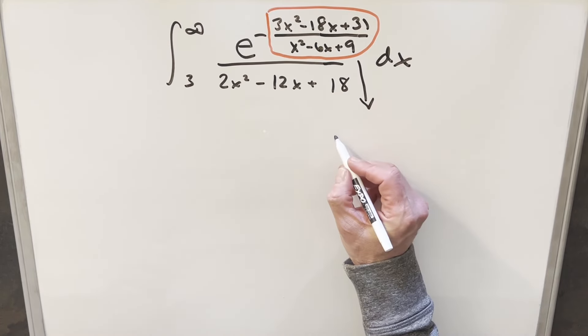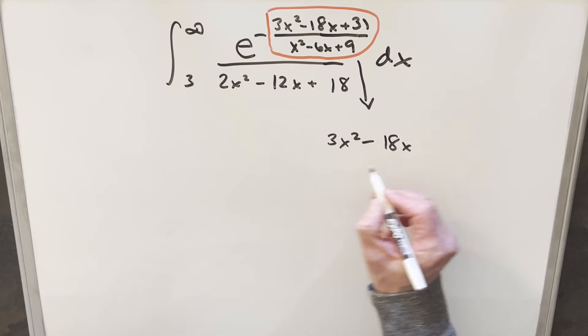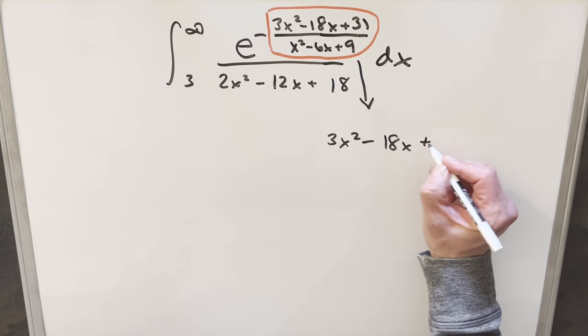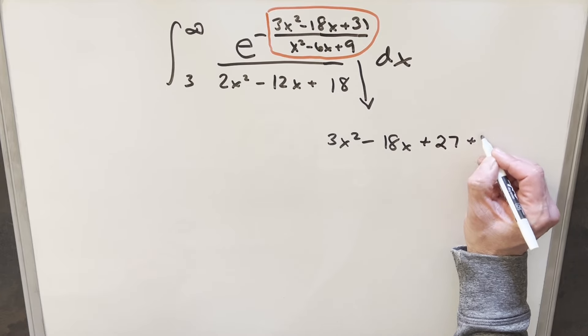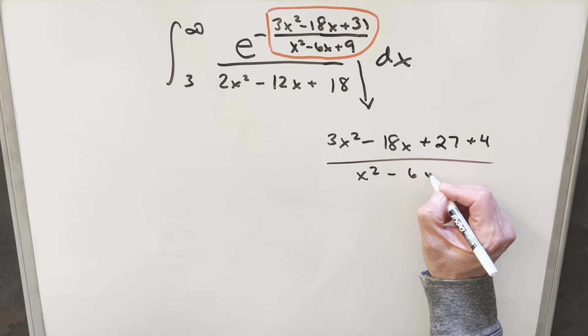So let's just take this exponent over here and deal with that separately. I'm going to write this out as three X squared minus 18 X. And then for this 31, let's just split this up. I'm going to write this as 27 plus four. And then we'll have this all over this denominator, X squared minus six X plus nine.